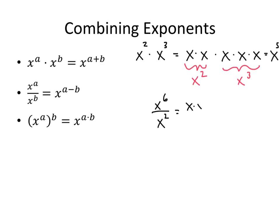On the top, that's x times x times x times x times x times x — let's make sure I had 6 there: 1, 2, 3, 4, 5, 6. And on the bottom, I have x times x. This x divides out with that x, and this x divides out with that x. What I'm left with is 4 x's all multiplied together, which is x to the fourth. And that's exactly what I get when I take 6 minus 2.